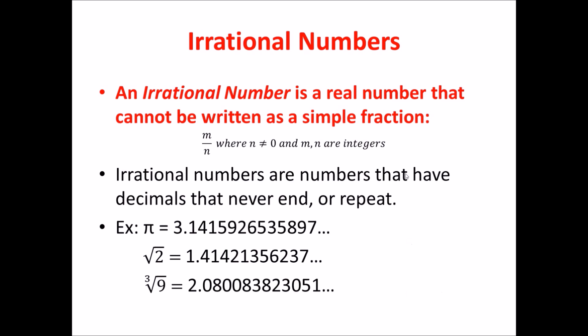An irrational number is a real number that cannot be written as a simple fraction, like m over n again, where n cannot equal 0 and m and n are integers. Irrational numbers are numbers that have decimals that never end or repeat. So there is never going to be an end to your number and there will be no repetition.